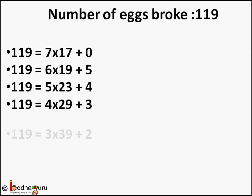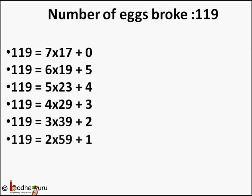So 119 fits into every statement the trader made. But notice: as the divisor changes from 7, 6, 5, 4, 3, 2, the quotient and remainder also change.